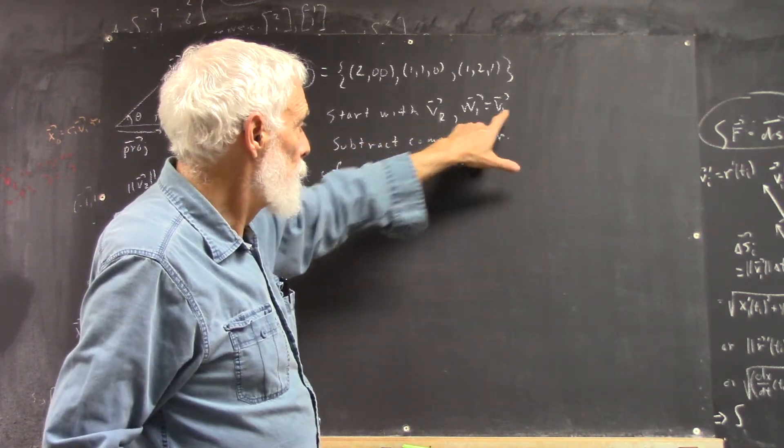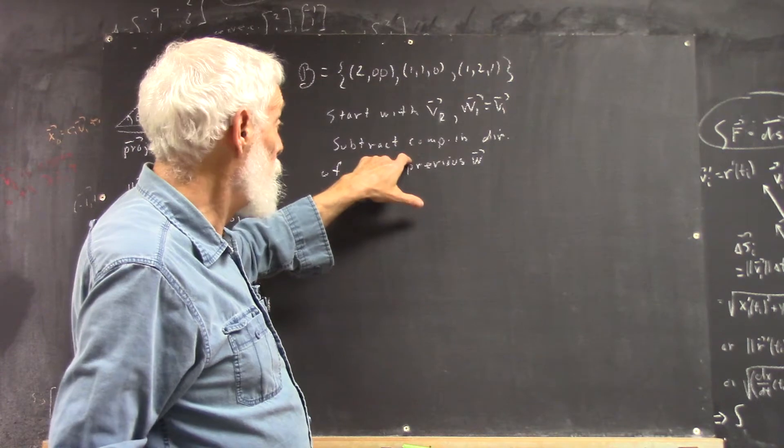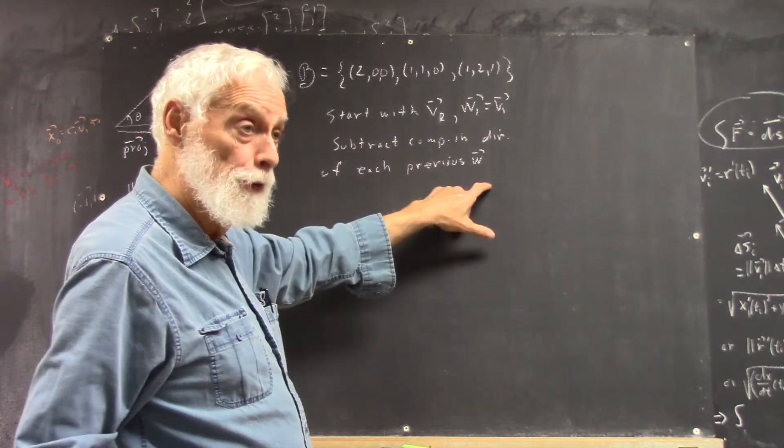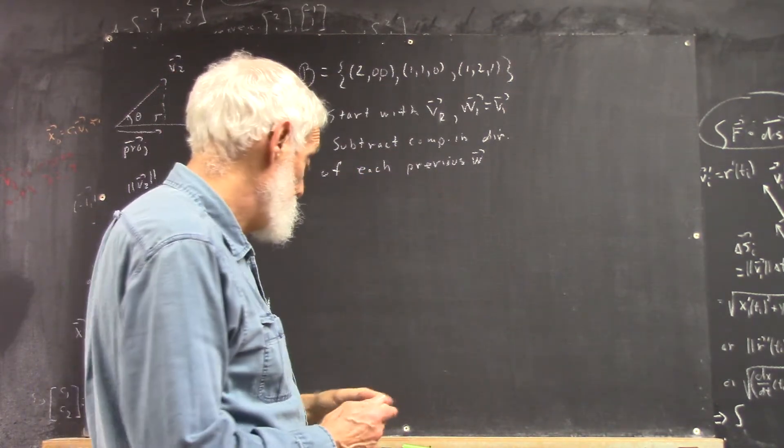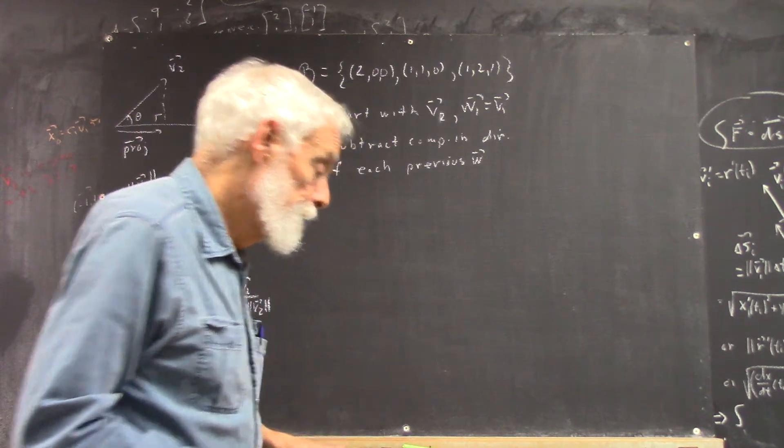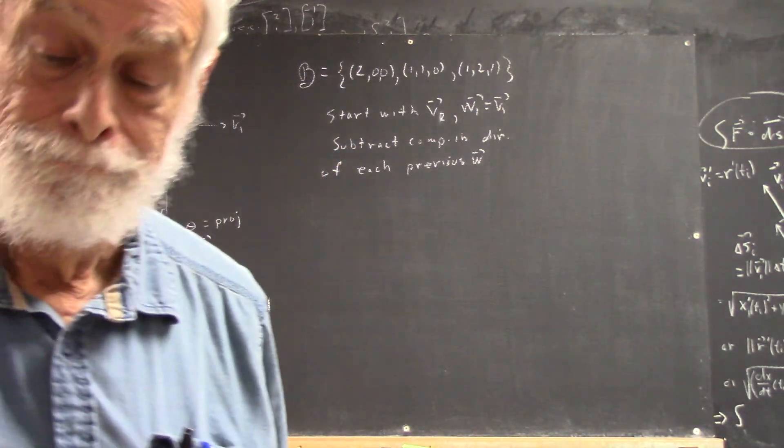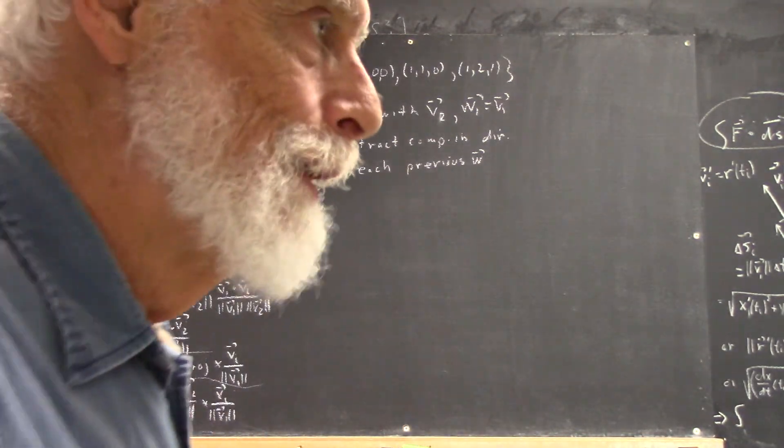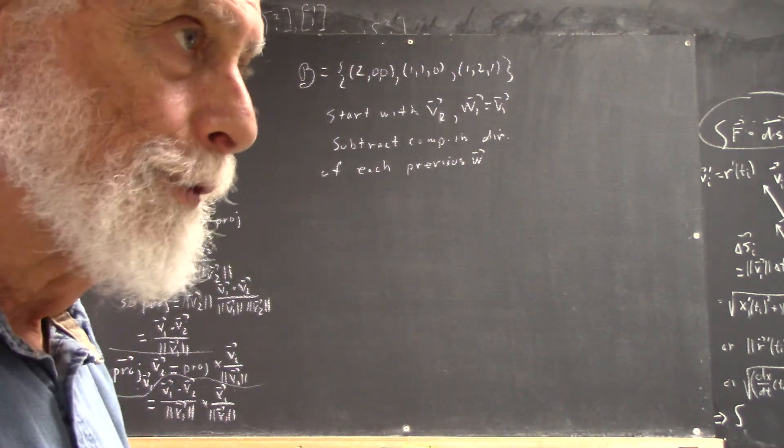You let W1 equal V1, start with W2, and subtract the component in the direction of each previous W. Using the projection. The component is the projection. The component you're subtracting is the projection. So, let's expand on this one.